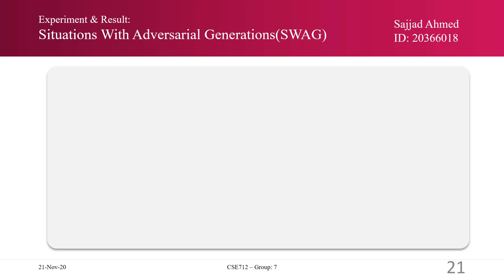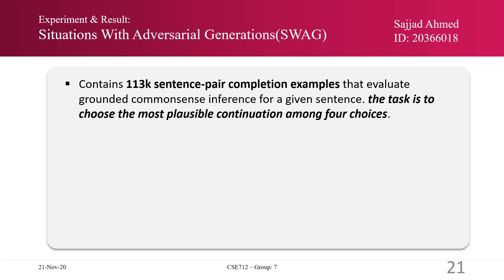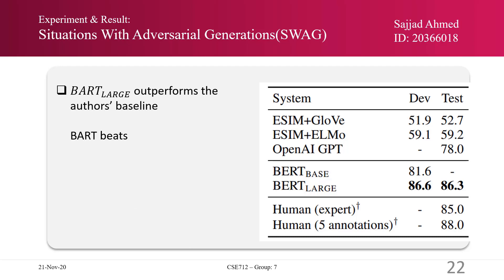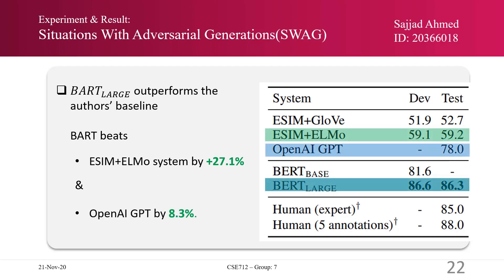They also considered the Situations With Adversarial Generations dataset, or SWAG, which contains 113K sentence-pair completion examples. The task is to choose the most plausible continuation among four choices. For training, they used a batch size of 16, fine-tuned for three epochs, and used a learning rate of 2e-5. BERT Large outperforms all baselines: it beats the ELMo system by 27.1% and OpenAI GPT by 8.3% improvement.